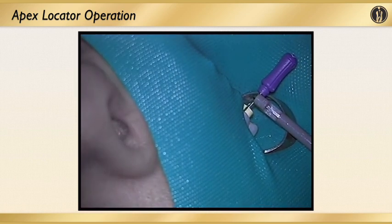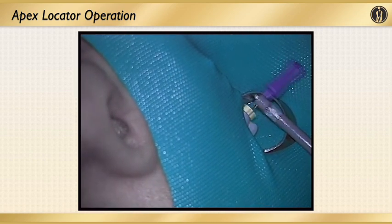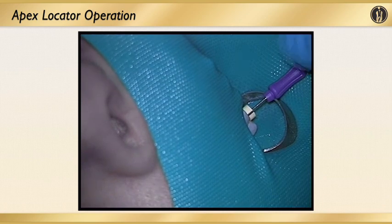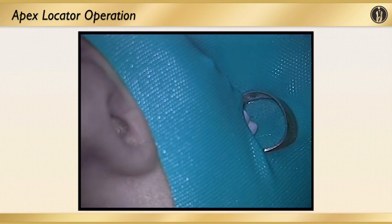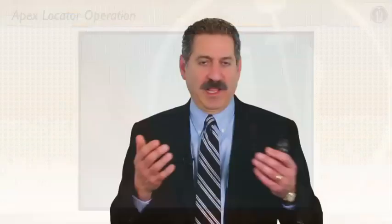Once you get to the position according to the diagram on the face of the Promark apex locator, take it out and that's where you measure to — that's the length you're going to go with.